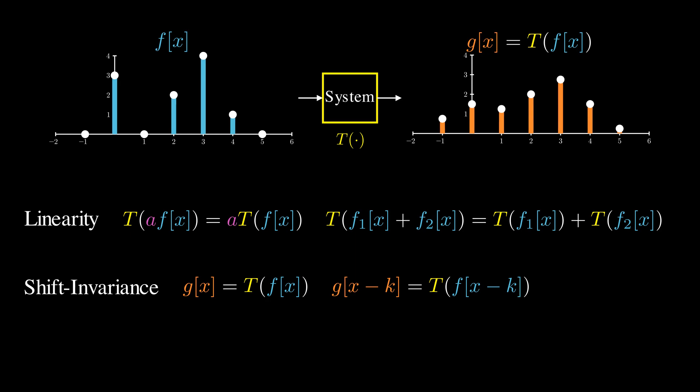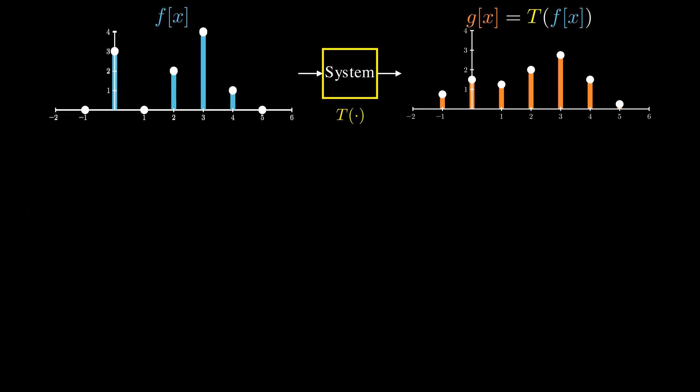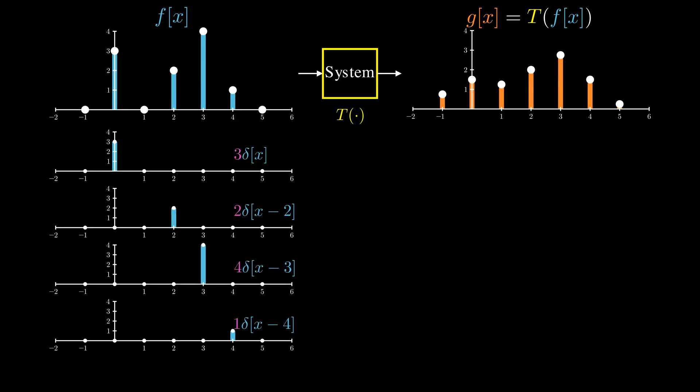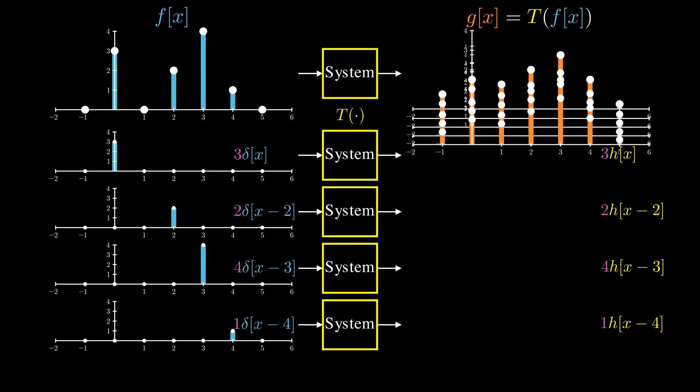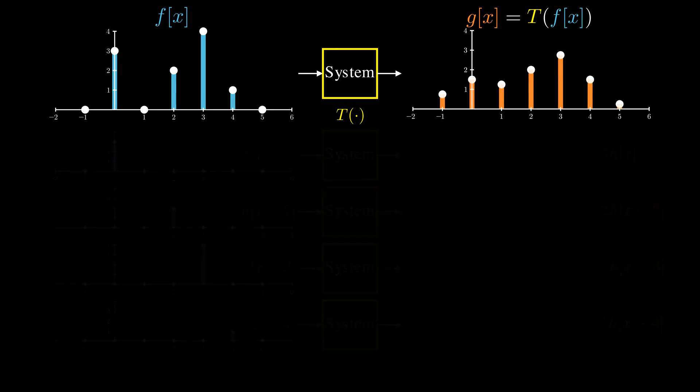So what can we do with such linear shift invariance systems? We can decompose any signal f into a collection of scaled and shifted impulse signals. Then we process each impulse separately to produce response from these impulse signals. Due to the linearity and shift invariance, we know that the outputs are scaled and shift impulse response h, and summing out all these responses reconstructs the final output g.